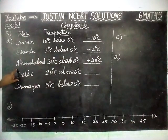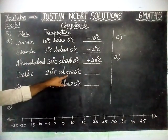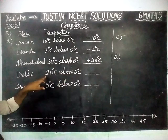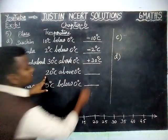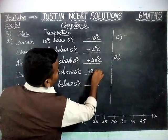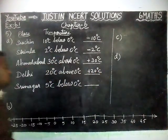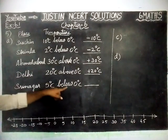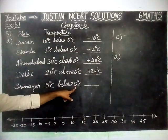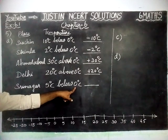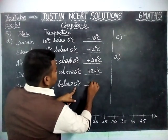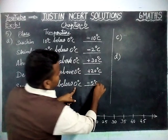And then, Delhi is 20 degree Celsius above 0 degree Celsius. Above 0 degree, so that is positive — plus 20 degree Celsius. And then, Srinagar is 5 degree Celsius below 0 degree Celsius. Below means we have to write it as a negative integer, so minus 5 degree Celsius.